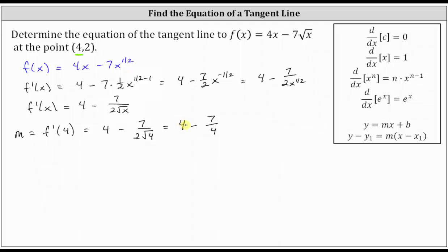If we write 4 as a fraction with a denominator of 1, the least common denominator is going to be 4. We multiply the numerator and denominator by 4, which gives us 16/4 minus 7/4, which is 9/4. This is the slope of the tangent line, and we also know the tangent line passes through the point (4, 2).